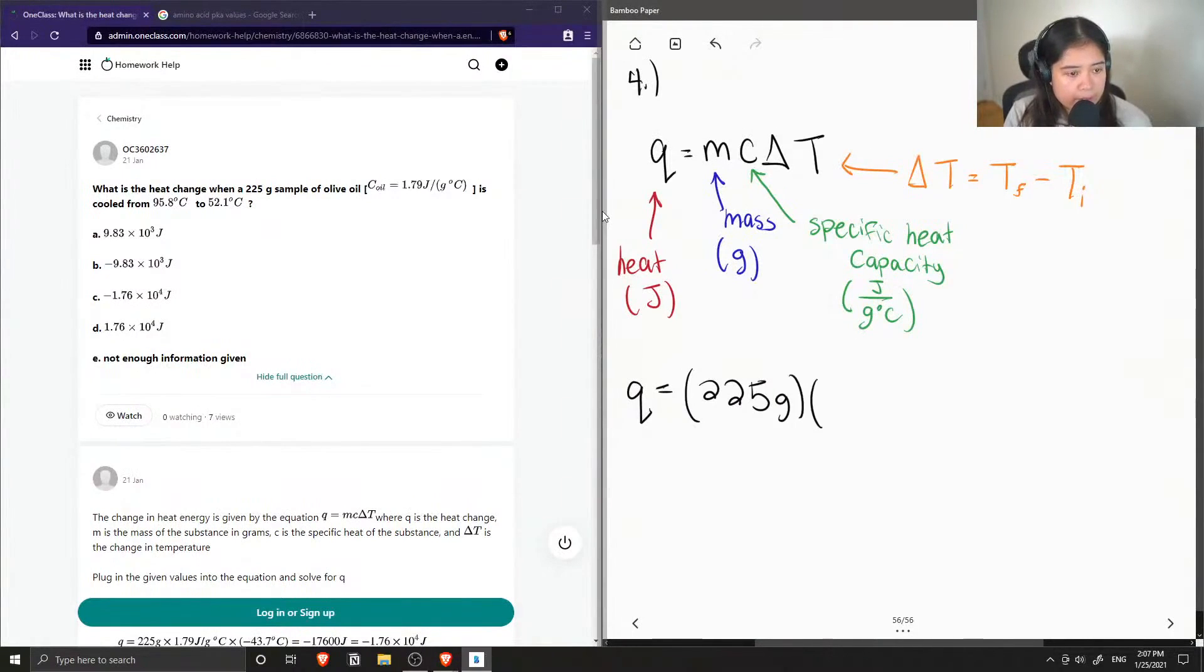We know its specific heat capacity is 1.79 joules over grams times degrees Celsius.